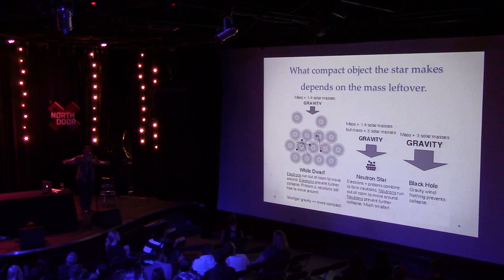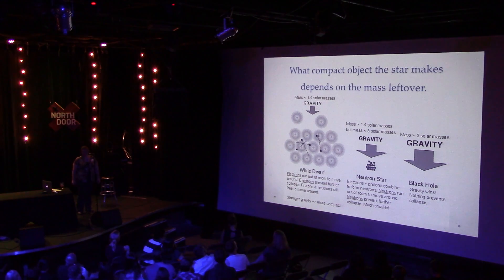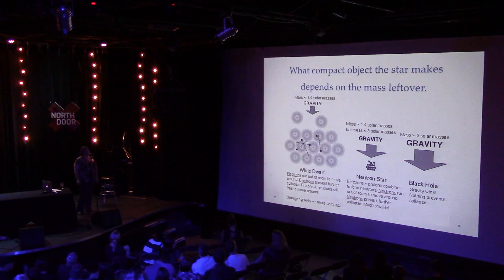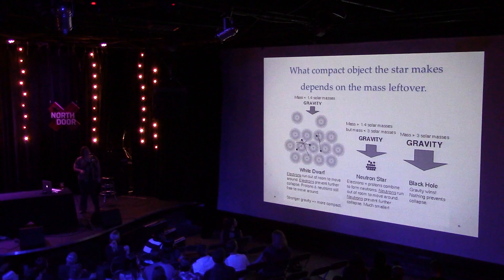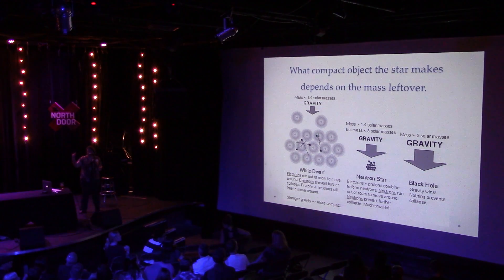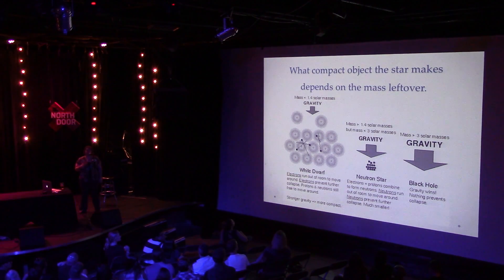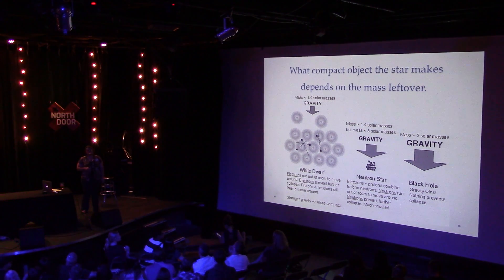Neutron stars have a diameter of about 20 kilometers — roughly the size of Austin — very tiny but very compact. It's the internal structure of the neutrons that keeps it up against gravitational collapse. Once you get above about two and a half to five solar masses — and this is somewhat of an embarrassment in the field because we don't know the exact number — the rigidity of a neutron star can't hold up against gravity anymore and the whole thing implodes into a black hole. By definition a black hole has infinite density.